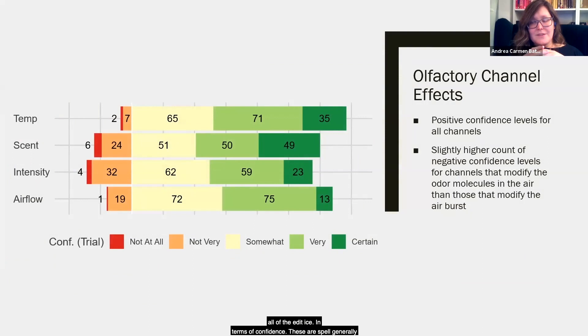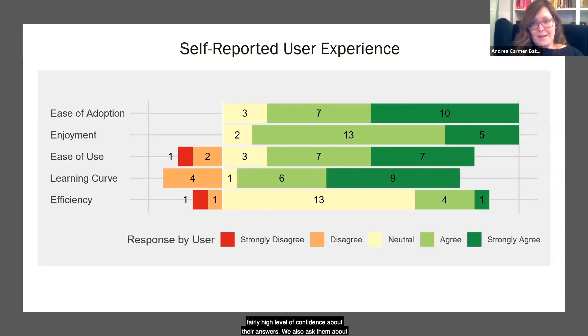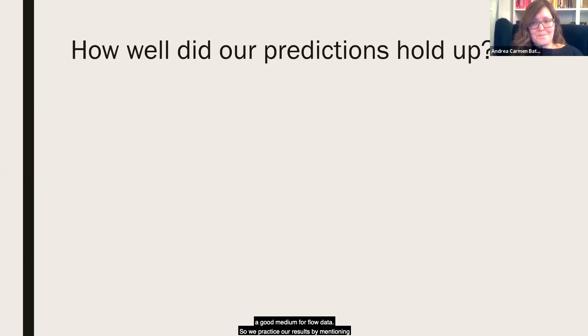So in terms of confidence, the users felt generally more confident for the channels that had direct effect on the medium of conveyance, that is to say the air burst, than they did on the channels that directly affected the scent in the air, the scent type or the scent intensity, but in most of the trials, the users felt a fairly high level of confidence about their answers. We also asked them about their experience. Participants found that our display was fun to use, and they thought that it was easy to adjust to using olfactory channels to interpret data once they got the hang of it. But there was a bit of a learning curve, and they felt that it wasn't very efficient. And that speaks to our notion of olfactation being a good medium for representing slow data. That's data that represents overarching themes or gradual processes.